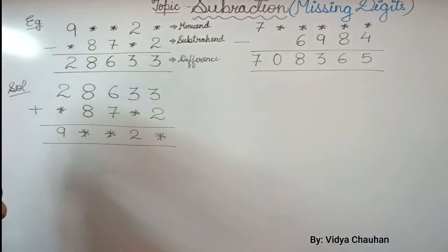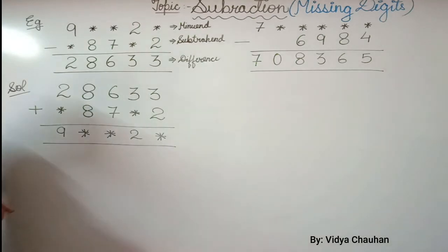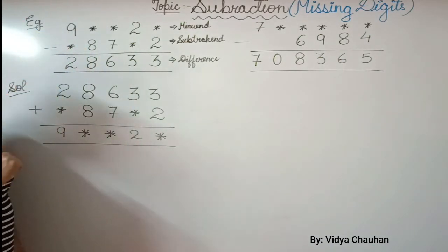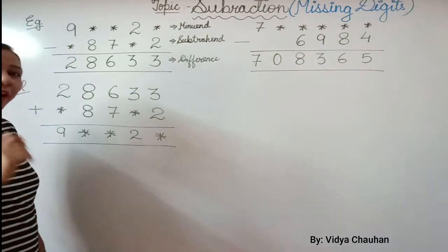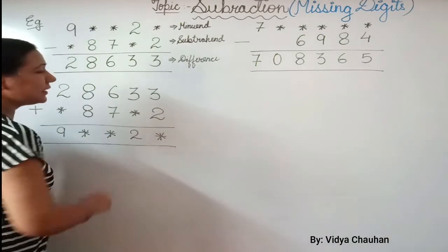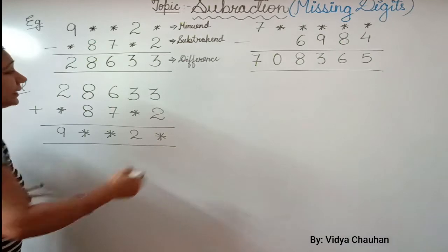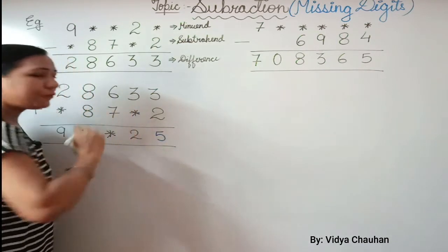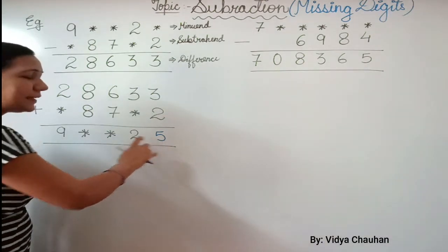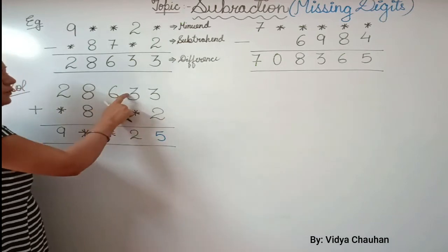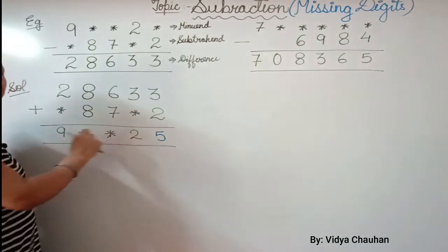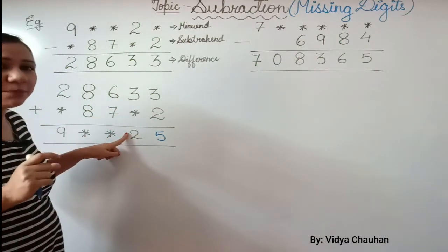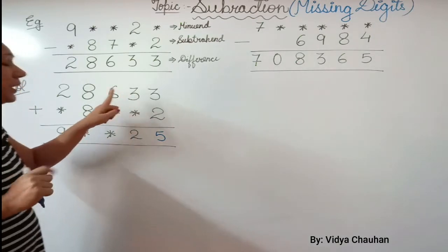Since I've converted the subtraction format to an addition format, it will be easier to solve. Adding the digits: 3 plus 2 is 5, so our first missing digit is 5. Coming to the second part, we have 3 here and we want 2 in the answer. The next number with 2 at the ones place after 3 is 12 — and 9 plus 3 gives us 12.